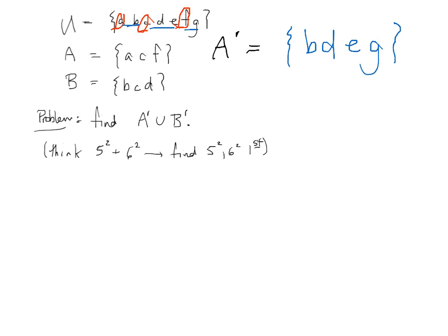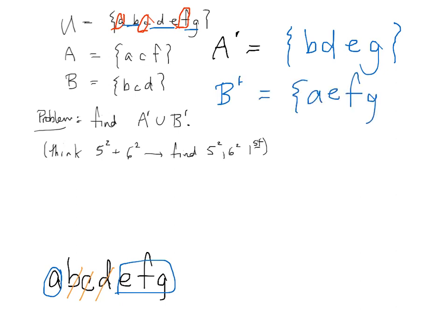I can play the same game. I guess I got to write U again. So I have A, B, C, D, E, F, G. And then my computation of B prime involves crossing off B, C, and D. Which leaves me with B prime, A, E, F, and G.